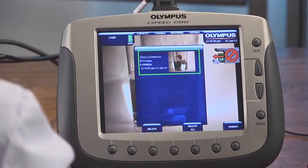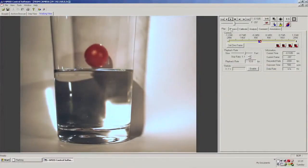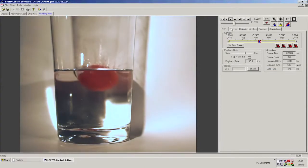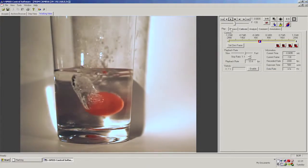Now I can take the card out of the camera. I can use that card in a laptop or PC and I can use the Olympus iSpeed software or the Olympus iSpeed 3 viewer to play back my video footage.